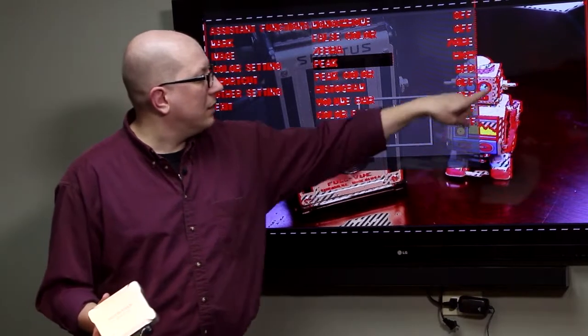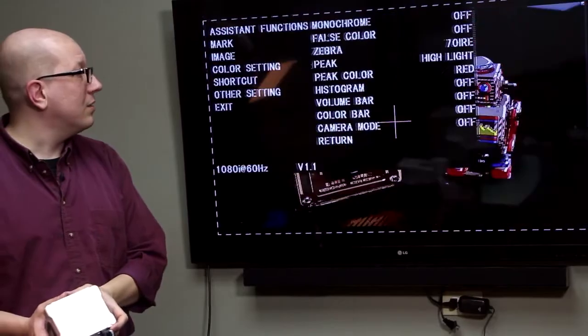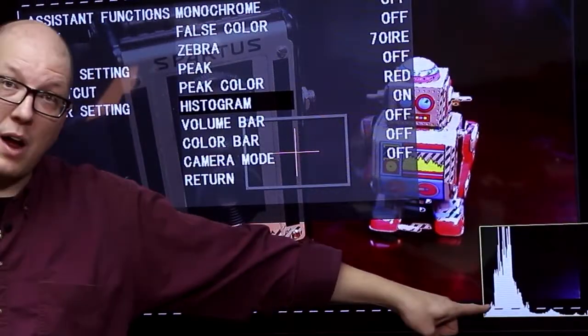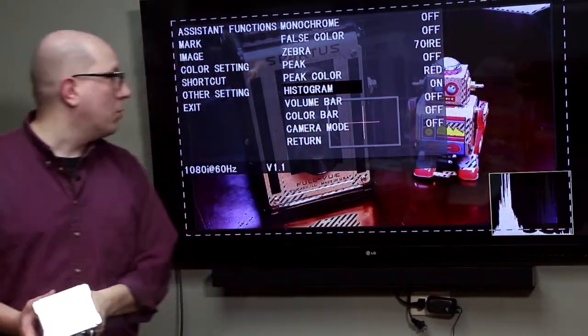Peaking, we get this red color that also helps us with focusing. You can choose what color that is. There's your full-time histogram in the corner, just like on your DSLR camera, except you can put this on any screen you want.